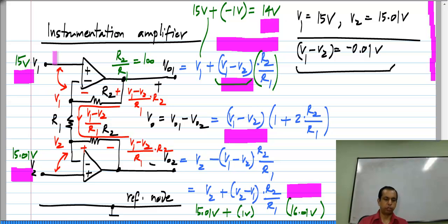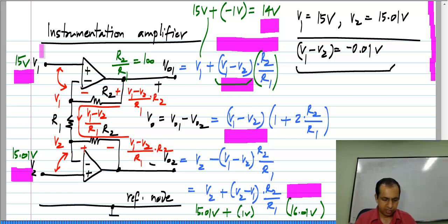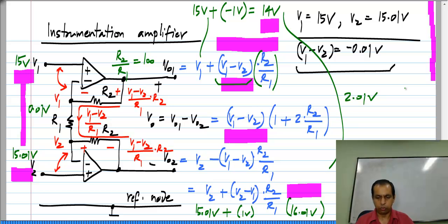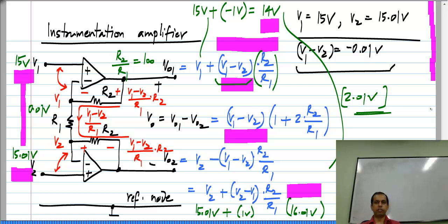This is important in instrumentation applications where you are trying to sense the difference between two quantities precisely. Each of those quantities can be large, but the difference can be small. What is a very small 0.01 volt difference between 15 and 15.01 volts has been converted to two voltages with a 2.01 volt difference. That is the value of this circuit — it is very useful and commonly used in instrumentation applications.